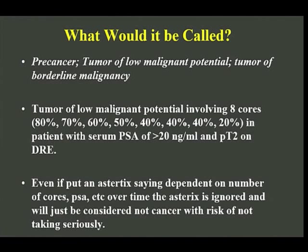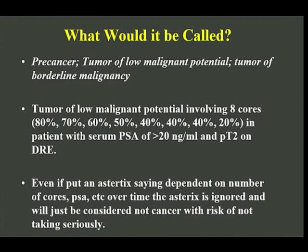No. We know that patient has a higher risk of having more aggressive cancer. We would all treat that patient aggressively. You could say if we call it a premalignant lesion, we'd put an asterisk: if PSA is less than a threshold, DRE is less than a threshold, and it's Gleason 6, then we call it low malignant potential. Otherwise, we call it cancer. But that's too complicated, and the definition would keep moving.